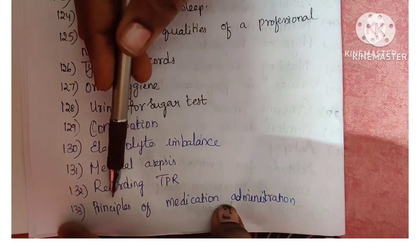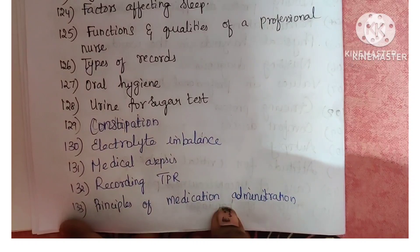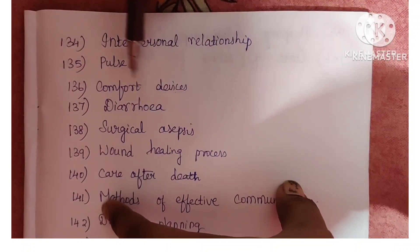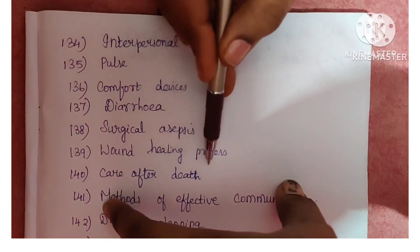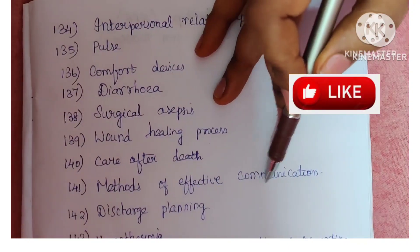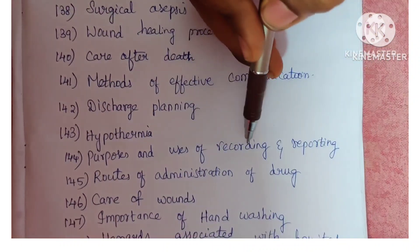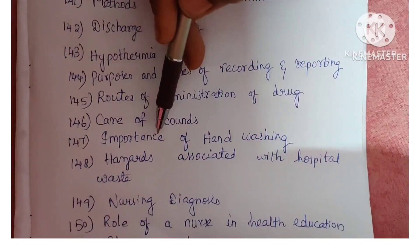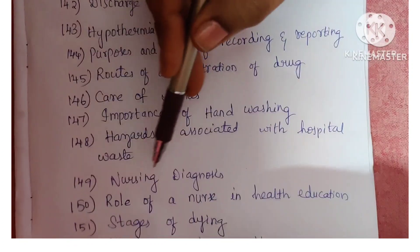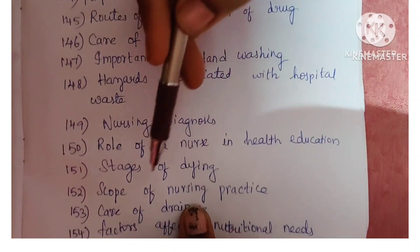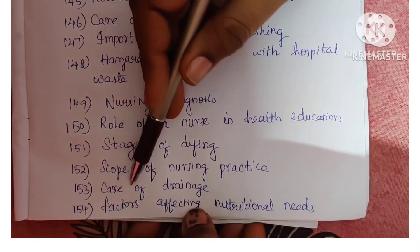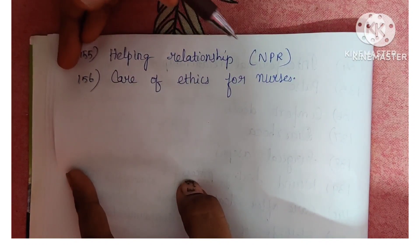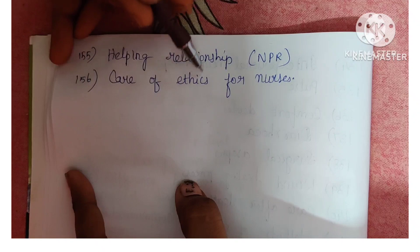Next is recording TPR — that is temperature, pulse, and respiration. Next is principles of medication administration. Next is interpersonal relationship. Next is pulse. Next is comfort devices. Next is diarrhea. Next is surgical asepsis. Next is wound healing. Next is care after death. Next is methods of effective communication. Next is discharge planning. Next is hypothermia. Next is purposes and uses of recording and reporting. Next is routes of administration of drugs. Next is care of wounds. Next is importance of hand washing. Next is hazards associated with hospital waste. Next is nursing diagnosis. Next is role of a nurse in health education. Next is stages of dying. Next is scope of nursing practice. Next is factors affecting nutritional needs. Next is helping relationship — that is nurse-patient relationship (NPR). Next is code of ethics for nurses.